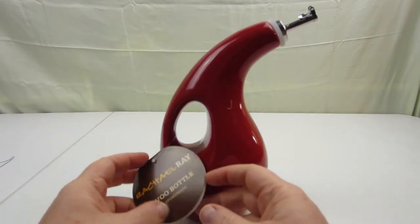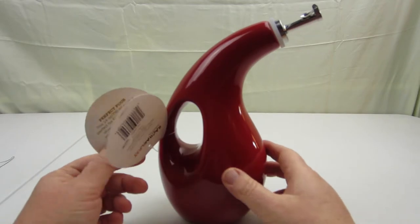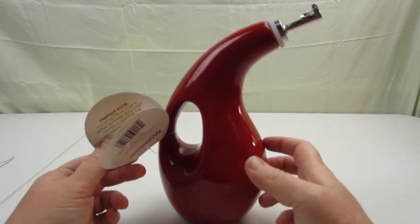Now this is a stoneware bottle that is meant to hold your EVOO, as she likes to call it, your extra virgin olive oil, or any other type of dressing that you want to make.